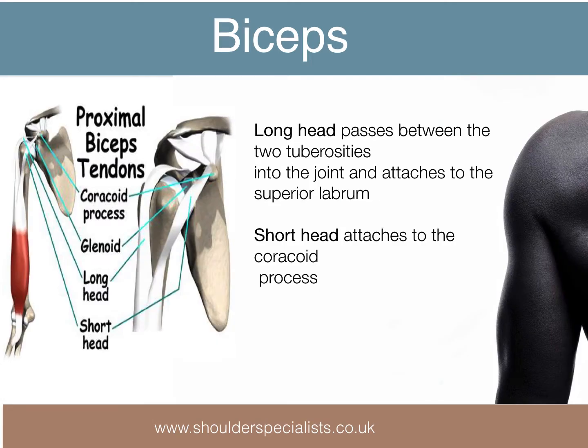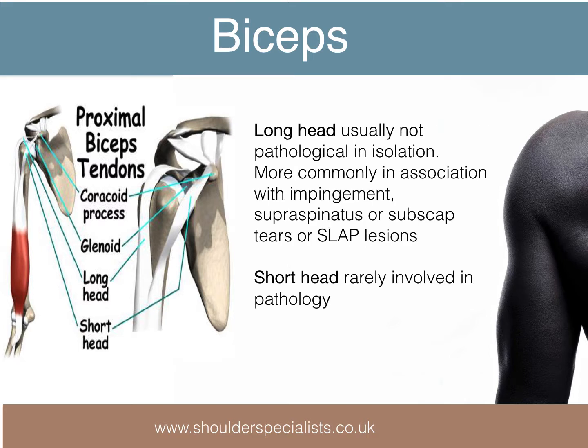Moving on to the soft tissues now, considering pathoanatomy of the biceps tendon. The long head of biceps passes through the intertubercular groove, close to the edge of the insertions of both subscapularis and supraspinatus, and attaches to the superior labrum. It is unusual for the long head to be pathological in isolation. More commonly, it is associated with additional pathology of the adjacent structures, such as impingement, subscapularis and supraspinatus tears, and SLAP lesions.